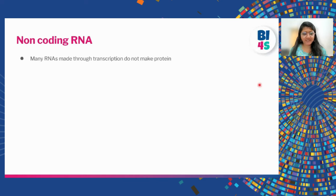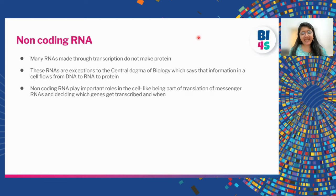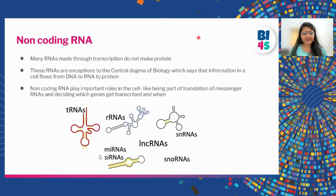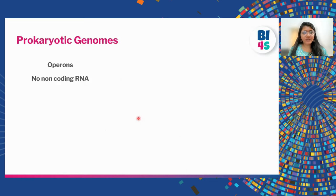Non-coding RNAs are made through transcription but do not code for proteins — they are exceptions to the central dogma, yet still have important roles. For example, transfer RNAs are important for making proteins; ribosomal RNAs are part of the ribosome which makes proteins; and there are other types of non-coding RNA that decide which genes get transcribed and when.